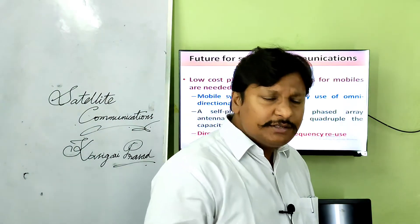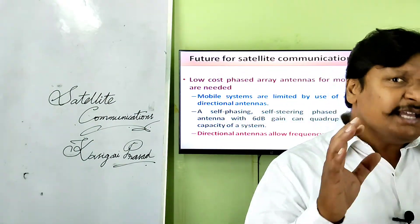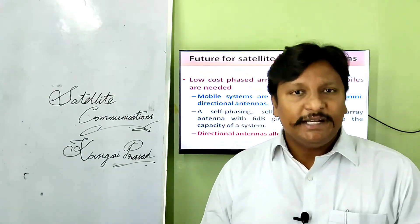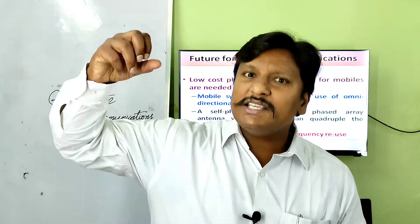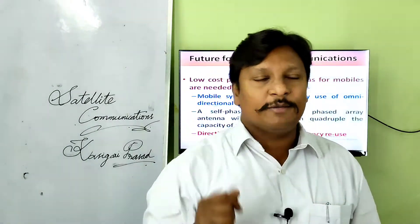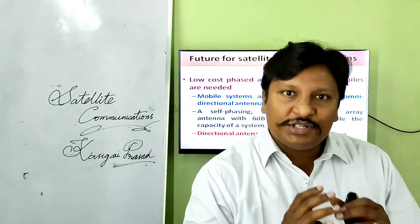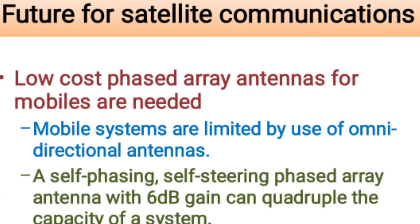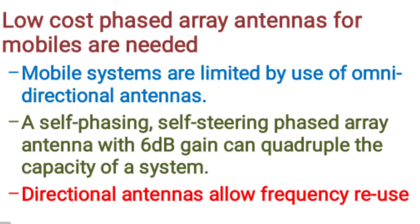A big feature for future satellite communications is that the size of the satellite should be small. If small-sized satellites are implemented, it becomes easier for launch vehicles to launch those satellites into their respective orbits. The future of satellite communication depends significantly on satellite size. Low-cost phased array antennas for mobiles are also needed, as mobile systems are currently limited by use of omnidirectional antennas.